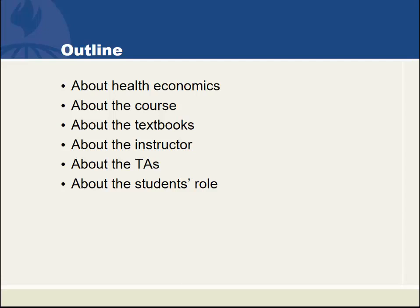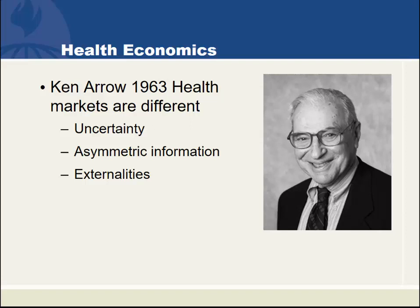I'd like to go back to the origins of the field of health economics. Most health economists date the origin of our field to a seminal paper written in 1963 by Nobel Prize winning economist Kenneth Arrow. The main point of his paper was that health markets are different, and health care and health as a commodity is a different sort of commodity. The three things that make it different are uncertainty, asymmetric information, and externalities. In a later part of the course, we'll describe how all three of these operate in health markets and why they make health economics so different.